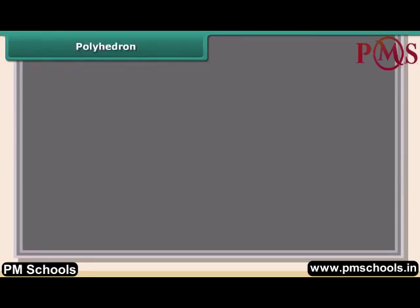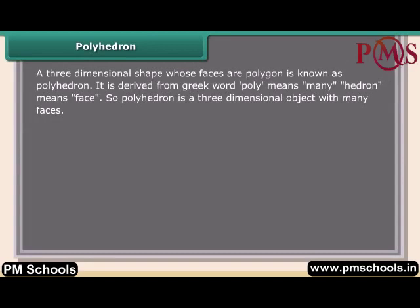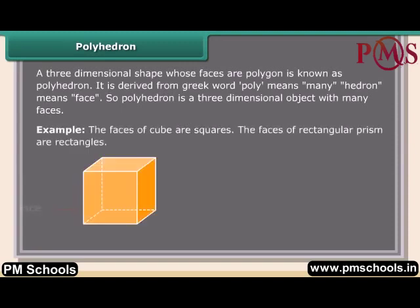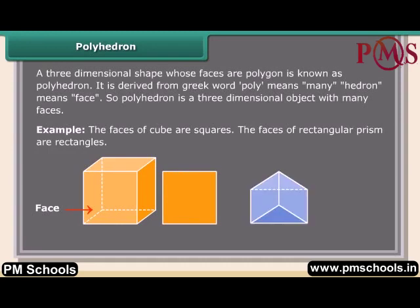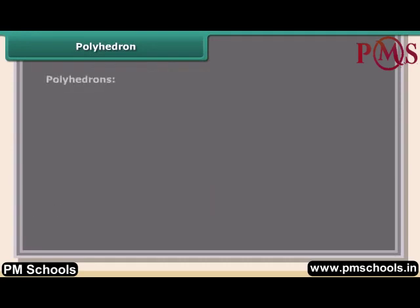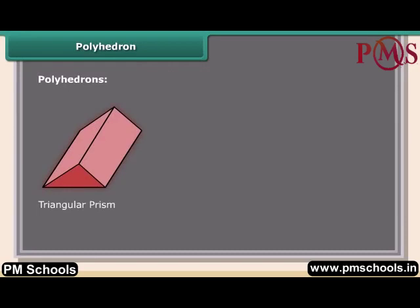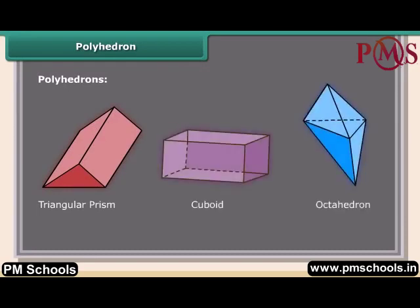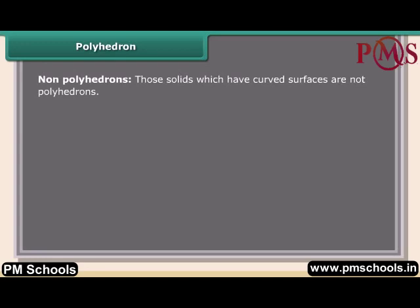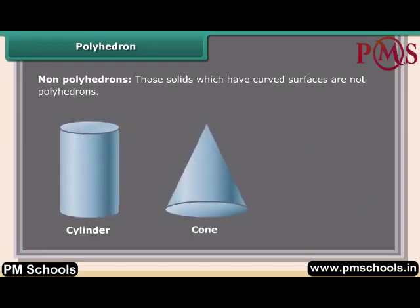A polyhedron is a three-dimensional shape whose faces are polygons. It is derived from the Greek words 'poly' meaning many and 'hedron' meaning face. For example, the faces of a cube are squares and the faces of a rectangular prism are rectangles. Those solids which have curved surfaces are not polyhedrons — for example, cylinder, cone, and sphere.